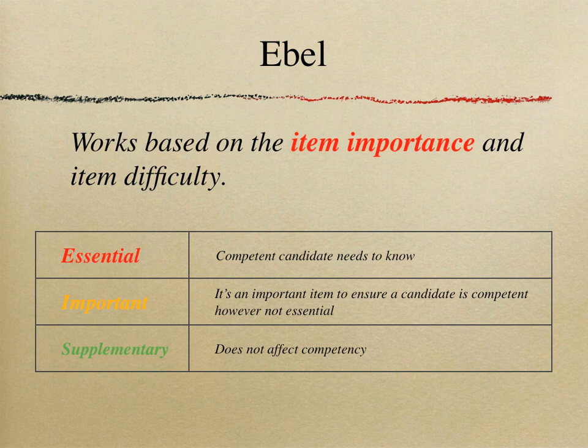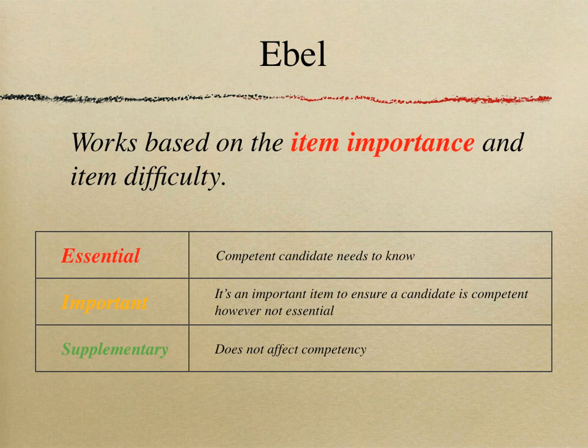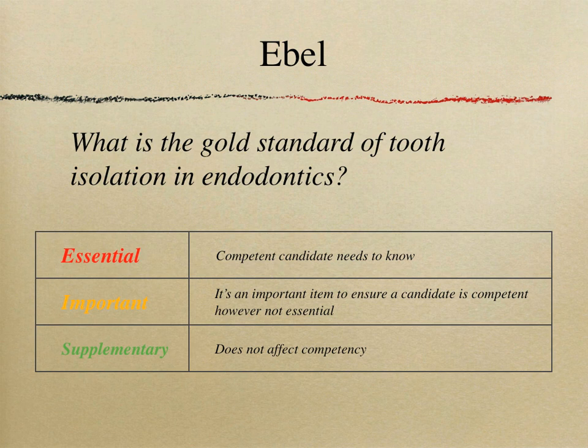In terms of item importance, you need to consider safe beginners — please refer to the first video in the series covering GDC guidelines. An item is essential if a competent candidate needs to know it; important if it generally ensures competency but isn't strictly necessary for safe practice; and supplementary if it doesn't affect competency. Some practitioners add a fourth category called 'questionable,' but for simplicity we'll focus on these three.